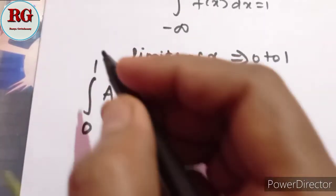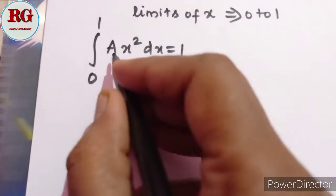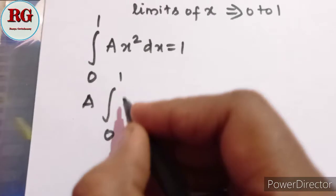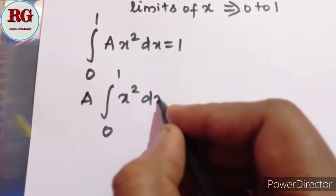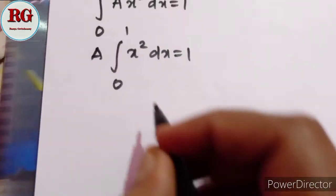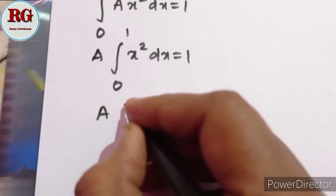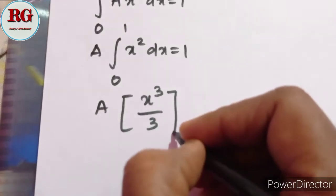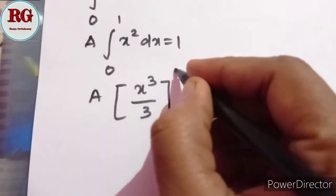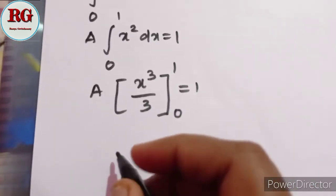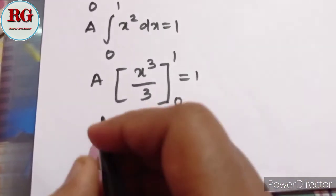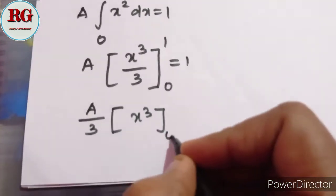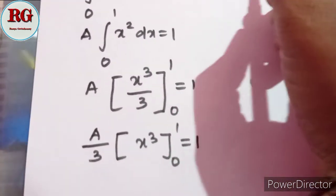The range is 0 to 1. Since A is a constant, we take it outside: A times the integral from 0 to 1 of x² dx equals 1. Integrating x² gives x³ over 3, evaluated from 0 to 1, equals 1.